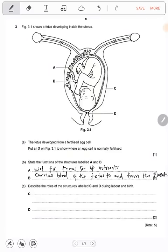Describe the roles of the structures labeled C and D during labor and birth. What is C and what's D? C is the muscle of the uterus, then D is the cervix. The muscle of the uterus contracts to push the baby out.